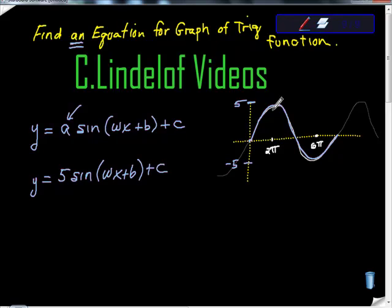Okay, so I have 5 sine of omega x plus b plus c. Also, I look, because this line of symmetry, this thing is symmetrical to the x-axis, it makes me believe that this thing has not been lifted. So I'm going to get rid of that, so plus 0 there. So far, this is actually not too bad.